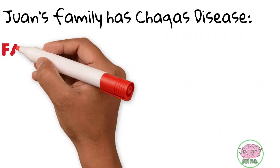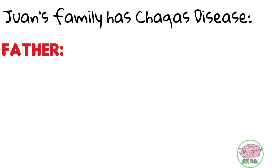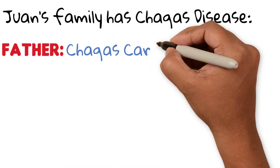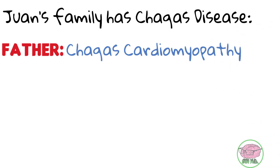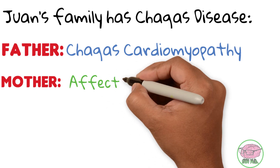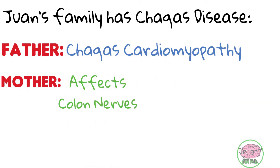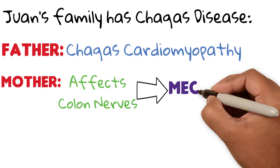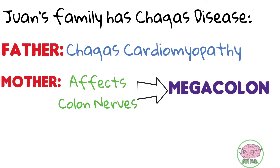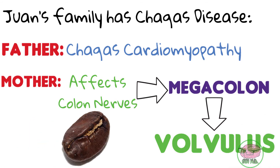This also explains Juan's family history: a father who died due to heart disease, which can be due to Chagas, and a mother who was operated on due to volvulus. Patients with Chagas also have an affectation in the colon, the large bowel, making it huge — known as megacolon — causing a huge sigmoid to twist upon itself, leading to the mother's volvulus.